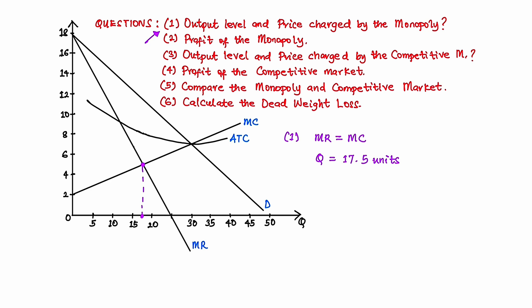Once we have the quantity, we go from the quantity all the way to the demand curve. Once we get to the demand curve, we trace the point all the way to the vertical axis, and this will give us the price. The price is approximately $11.50. So this is the quantity and the price that the monopoly will charge and the output that the monopoly will produce. This answers question 1.